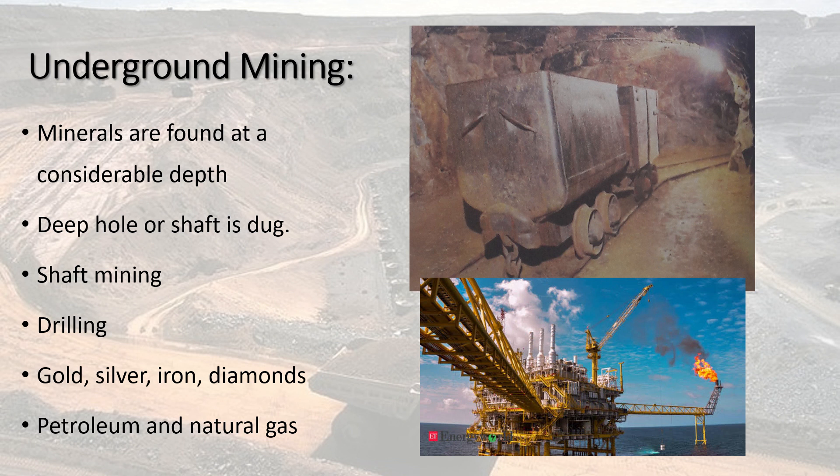Through the underground mining process, we dig really deep holes and insert pipelines, or dig huge holes with railway tracks. This kind of digging is called drilling. For petroleum, natural gas, gold, silver, iron, diamonds, etc., we use this kind of mining. A worker in a mine is called a miner.